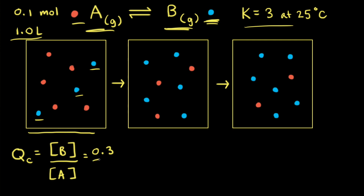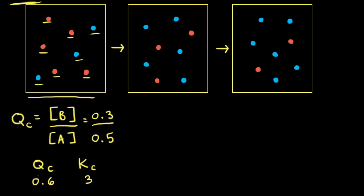Next, we divide by the concentration of A. There are 5 red particles, and each particle represents 0.1 moles, so 5 times 0.1 is 0.5 moles of A. Divided by a volume of 1 liter gives a concentration of 0.5 molar for A. Notice we could have just counted the particles — 3 blues and 5 reds — and done 3 divided by 5 to get the same value for QC.